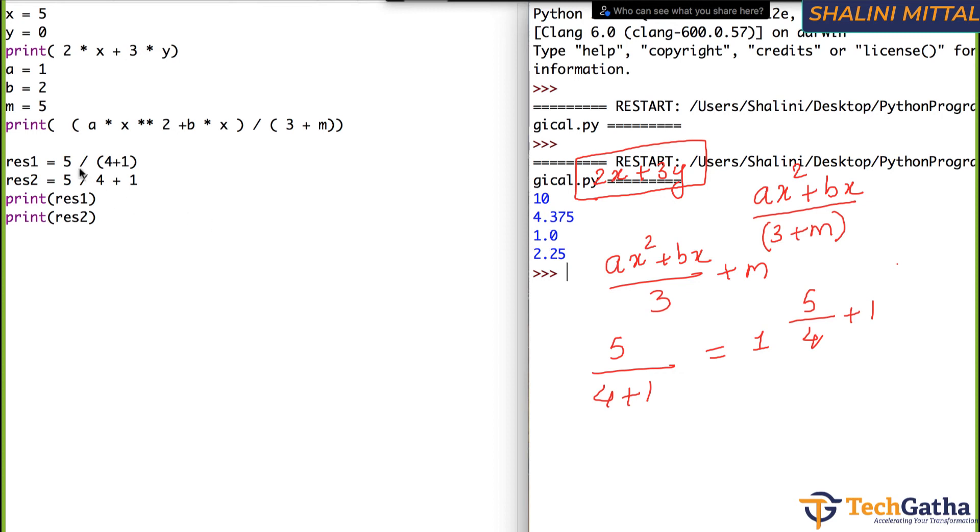So see, 5 by 4 plus 1, 5 by 5 is 1. 5 by 4 is 1 point something, 1 point 25 plus 1 gives us 2 point 25.